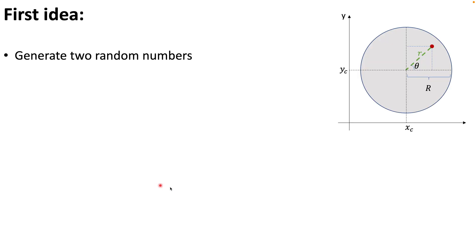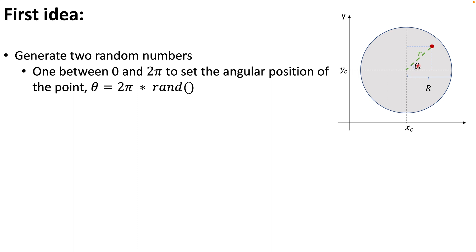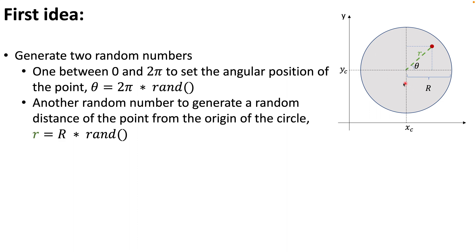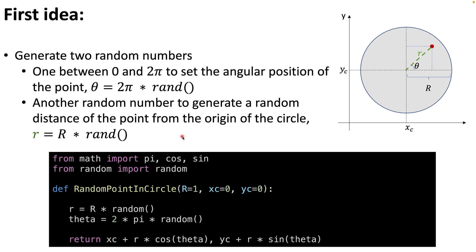The first idea that comes to mind is to generate two random numbers — one for theta, the angular position of the point, within 0 and 2π so the point can be at any location within the circle, and another for the random distance (small r) between the origin and the point, which is basically a function of capital R and the random number generator. In Python, the function takes the radius, x center, and y center as input arguments, calculates small r and theta using rand(), and returns the x and y coordinates as a tuple.